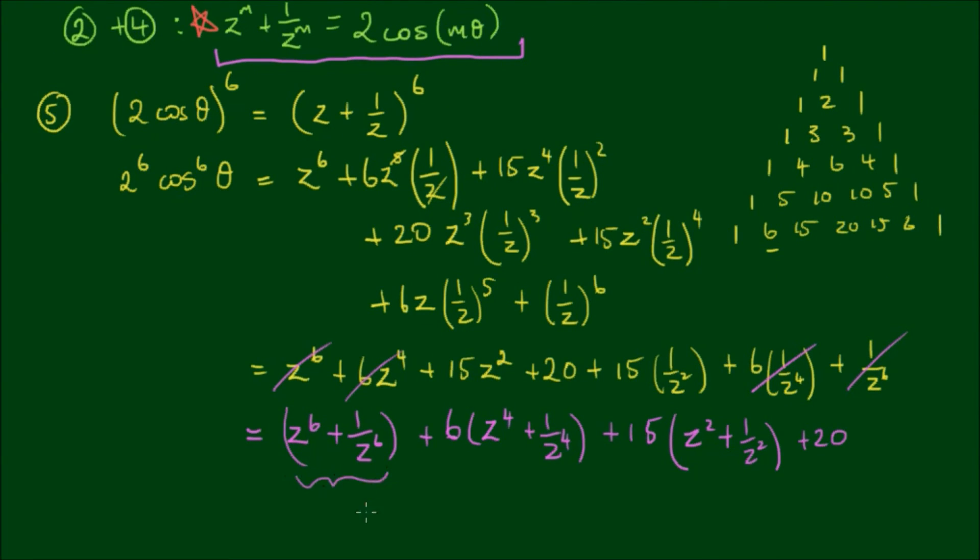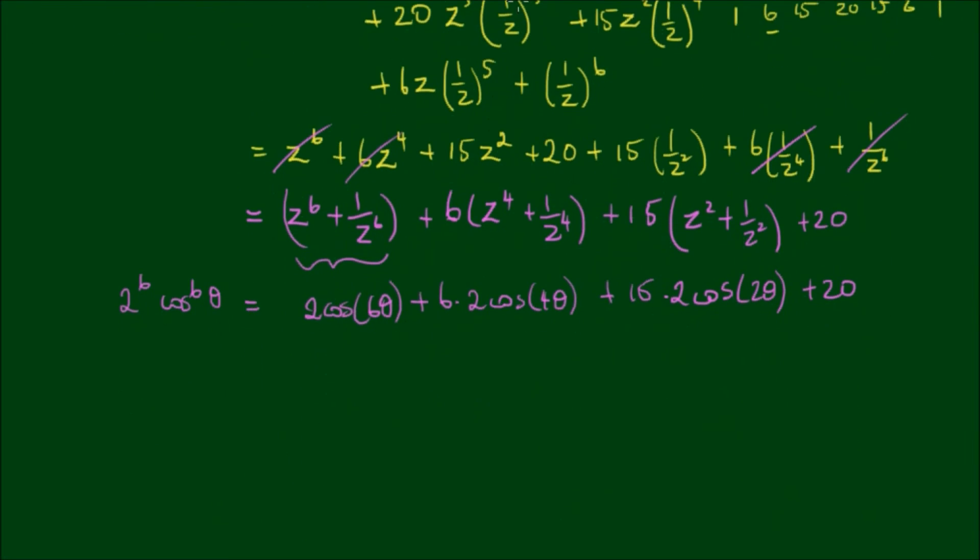Now using this relationship, we can say that z to the 6th plus 1 on z to the 6th is equal to 2 cos of 6 theta, plus 6 by 2 cos of 4 theta, plus 15 by 2 cos of 2 theta, plus 20. And this is all equal to 2 to the 6th. And now dividing both sides by 2 to the 6th.